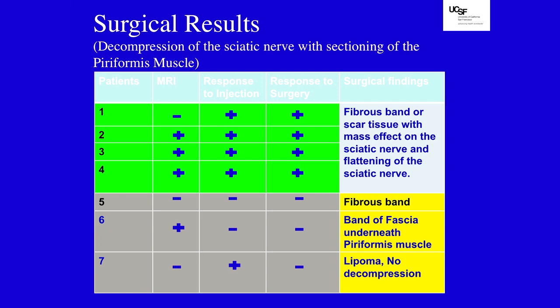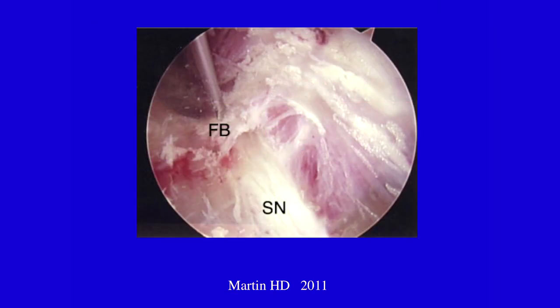Patients who had abnormalities on MR as well as a positive response — pain reduction — with sciatic nerve block had a favorable outcome with surgical decompression. Those with no abnormalities on MR or no response to injection tended to have an unfavorable response with no symptomatic relief from surgical decompression. Here is an intraoperative view showing the fibrous band that can compress the sciatic nerve as it traverses through the notch.